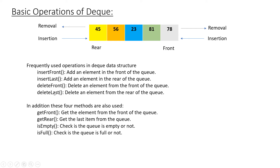In addition to these four operations, we have four more methods: get front returns the element from the front of the queue — in this case it returns 78; get rear returns the element from the rear — in this case it returns 45. We also have a method to check if the queue is empty and another to check if the queue is full. Together these are eight methods commonly used for Deque operations.